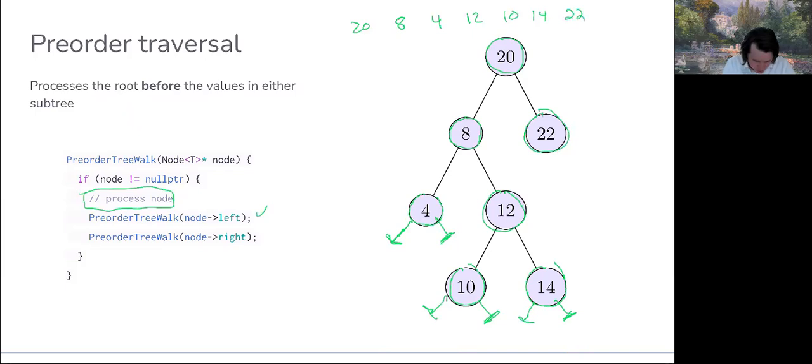We visited it, so we'll process it first. And then there's no way to go because both the left and right of 22 are the null pointer. So at this point, the activation record for pre-order tree walk on node with key value 22 is removed from the stack, as is that of the root, because we've already processed the node, walked left, walked right, and we're done. We've completed a pre-order traversal.